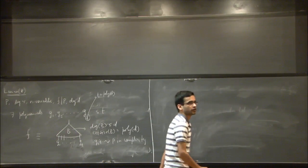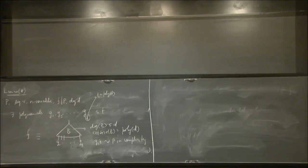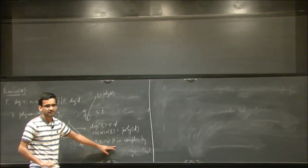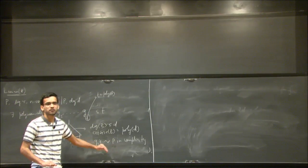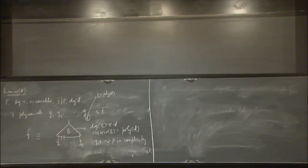Let me start by showing something. The Gᵢ's will essentially be partial derivatives of P of some type. The statement is nontrivial because of the structure of the Gᵢ's — I'll show you what they are. And they will be like P in terms of complexity.